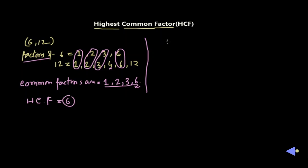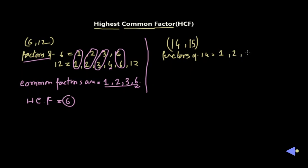Let us take another example. Suppose we have the pair of numbers 14 and 15. We need to find the common factors of 14 and 15. The factors of 14 are: 1, 2, and 7 — since 2 times 7 equals 14 — and 14 itself, as 4, 5, and 6 are not exact divisors of 14. The factors of 15 are: 1, then 3 and 5 since 3 times 5 equals 15, and 15 itself — noting that 15 is not divisible by 2.